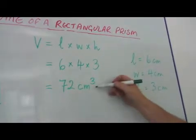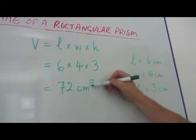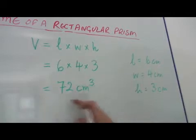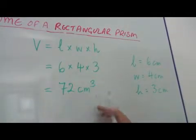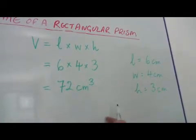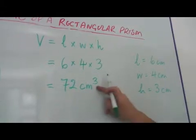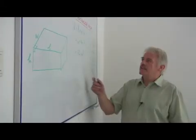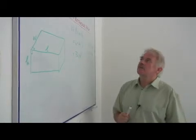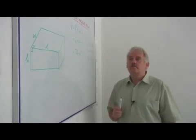The reason it's cubed is because we have three dimensions. In one dimension it's a length, that's in centimeters. Two dimensions, centimeters squared, it's an area. Three dimensions, centimeters cubed. So that simply is how to calculate the volume of a rectangular prism.